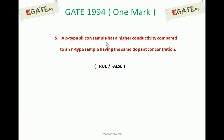A p-type silicon sample has a higher conductivity compared to an n-type sample having the same dopant concentration. True or false? A p-type silicon sample has a higher conductivity compared to an n-type sample whenever they have the same dopant concentration.